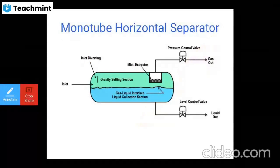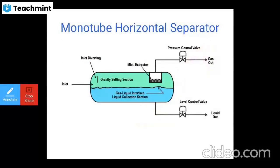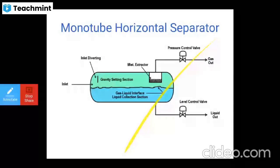The monotube horizontal separator shows a gravity settling section, gas-liquid interface, and liquid collection section — gas is taken out at the top and liquid at the bottom. The dual tube horizontal separator has two tubes: the top tube is the gravity settling section and the bottom tube is the liquid collection section. An inlet diverter and mist extractor are present; gas is taken out at the top with pressure control, and a liquid control valve is at the bottom. Gas and liquid are separated in this system.